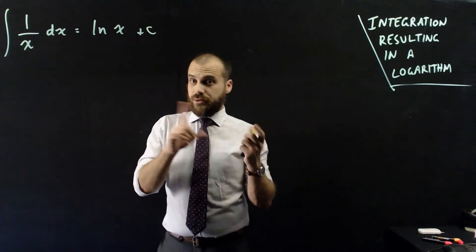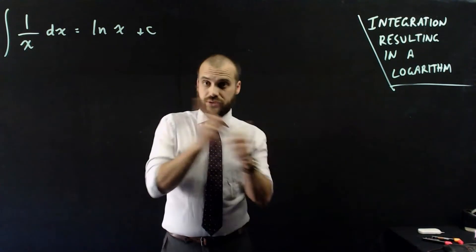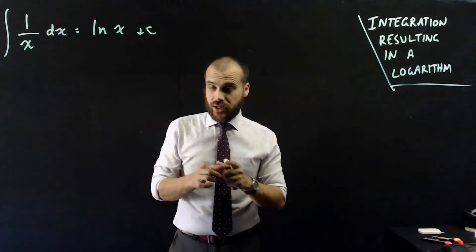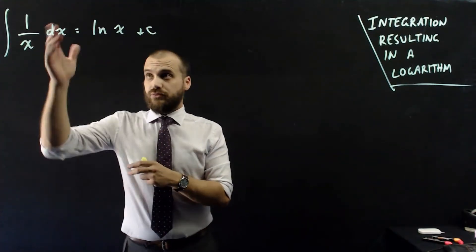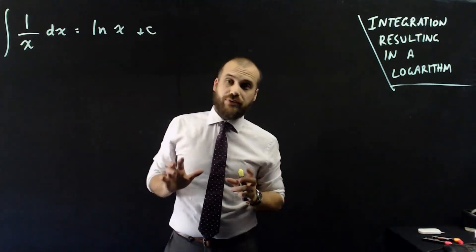Now, the reason for that is pretty straightforward. Derivatives and integrals are reverses of each other. The derivative of natural log x is 1 on x, therefore the integral of 1 on x is ln x.